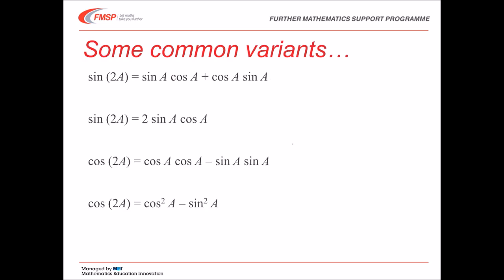Some common variants. Sine of 2A is sin A cos A plus cos A sin A, so that's just two lots of sin A cos A. And cos of 2A is cos A cos A minus sin A sin A, or cos squared A minus sin squared A. These are easy to work out, but they're also very easy to remember, so you probably won't need to work them out.